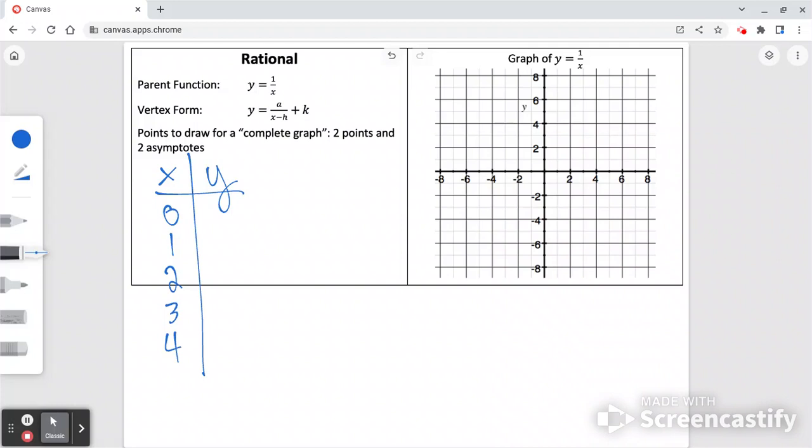We're starting with x is 0, then 1, 2, 3, 4. So let's think about plugging it in to this equation. We'd get 1 over 0, 1 over 1, 1 over 2, 1 over 3, 1 over 4.